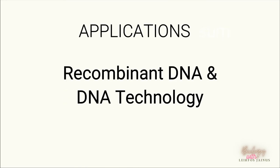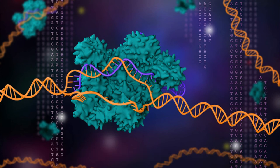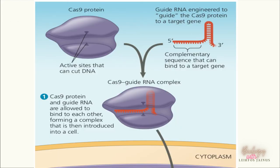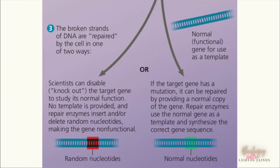Another example of the application of recombinant DNA technology is the CRISPR-Cas9 system. CRISPR, which stands for Clustered Regularly Interspaced Short Palindromic Repeats, is a powerful gene editing tool that can cut, replace, or disable specific genes on the DNA. The edited gene can also be inherited through a population, known as gene drive. The CRISPR-Cas9 system consists of the Cas9 protein, or endonuclease, and a guide RNA that can enter the nucleus to cut a specific target gene to disable or repair it to form a normal gene.